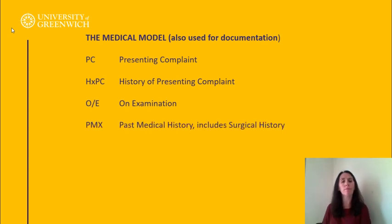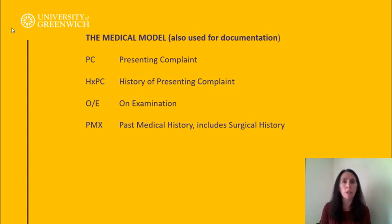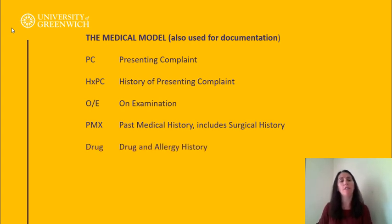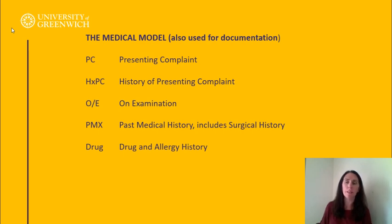Past medical history — what have you suffered with in the past? Any hospital visits, any surgeries? That's really important because if someone has had a surgery and presents with chest pain, they might be having a PE — a pulmonary embolism. Drug history encompasses prescription drugs, non-prescription drugs, over-the-counter drugs, herbal remedies, alcohol, illegal drugs, and also allergies.